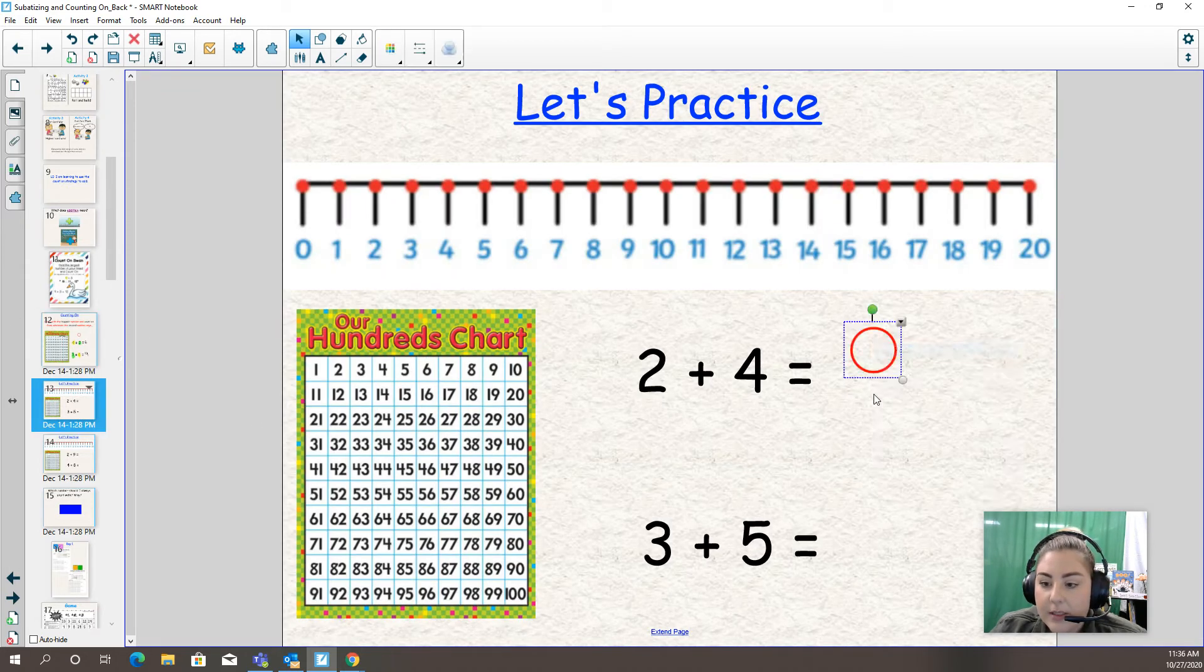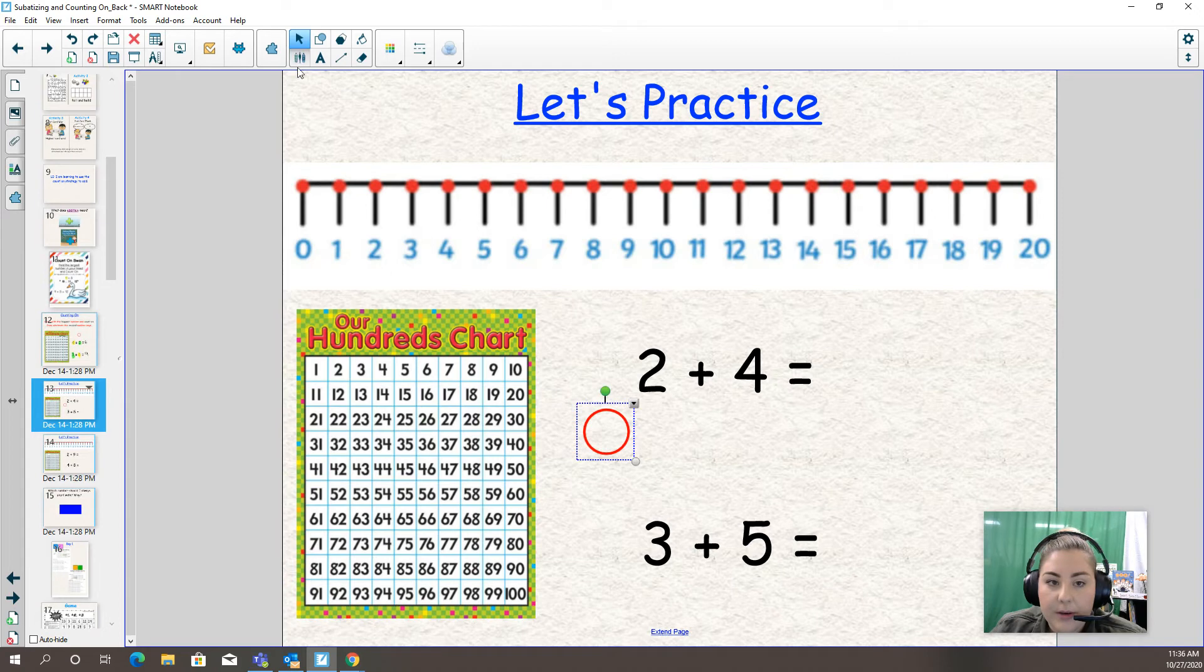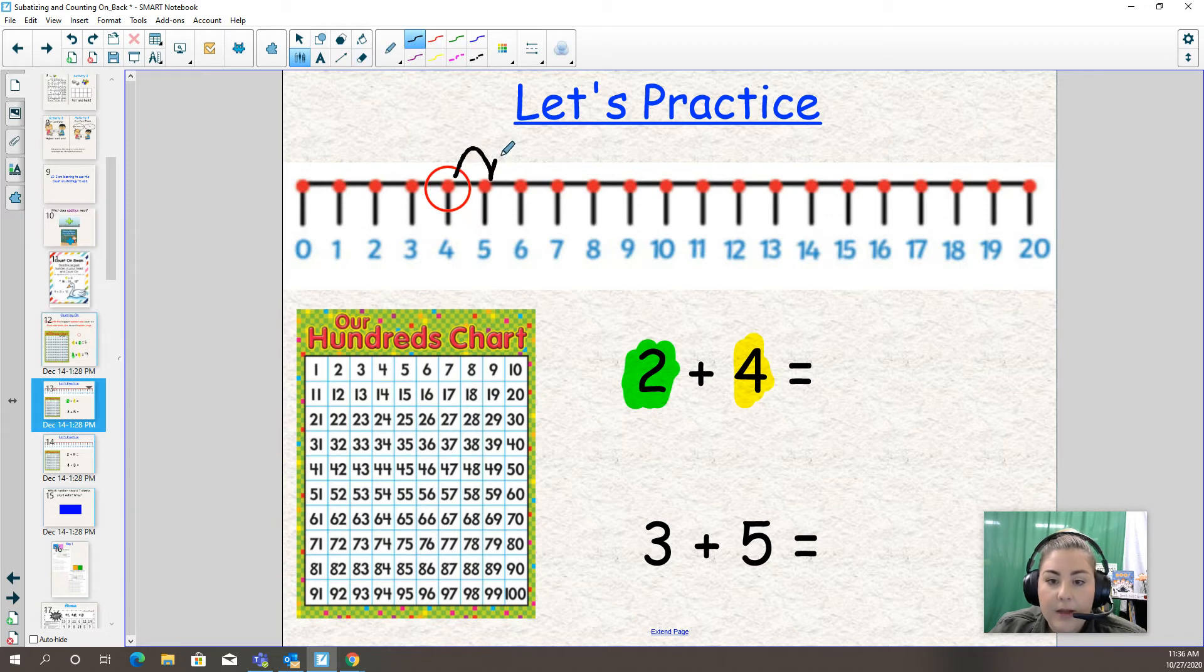Let's look at two plus four. Which one's the bigger number? Let's highlight the bigger number in yellow: four. That's right. This time I'm going to use the number line. We're going to count on two times. Four, five, six. So you put four in your head. Five, six. So two plus four is six. Good job.